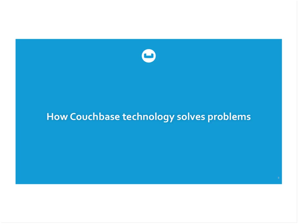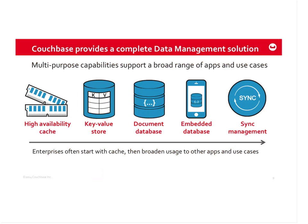Couchbase Server — how are we solving some of these problems? We have two products: Couchbase Server, your backend NoSQL database, and Couchbase Mobile. Couchbase Server is a key-value store and a document database rolled into one, with an integrated cache. This single database can effectively be a high-availability cache, a key-value store, a document database, or any combination of those.